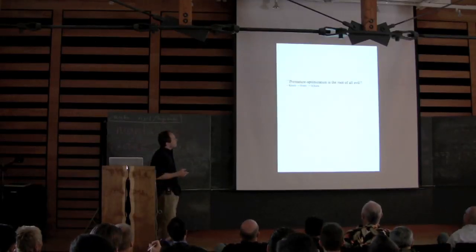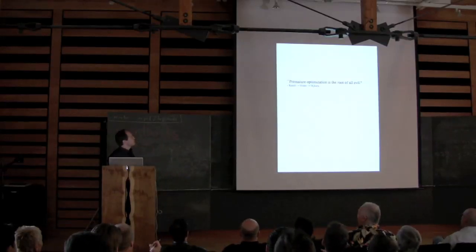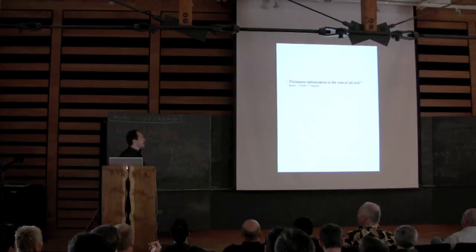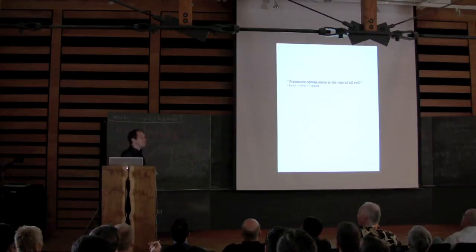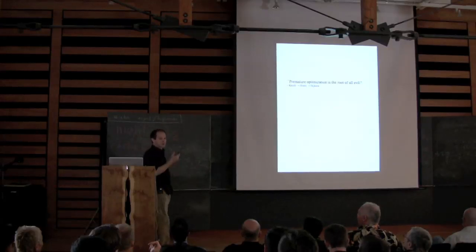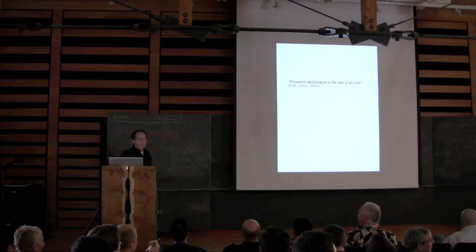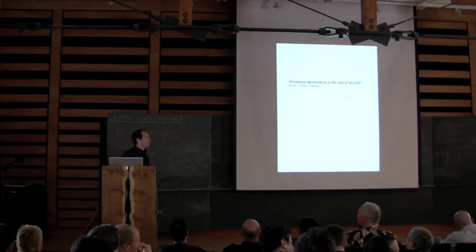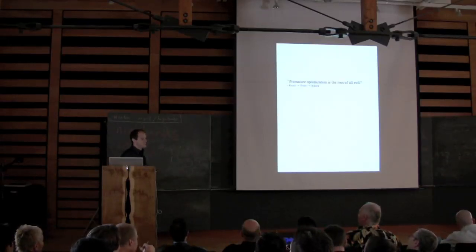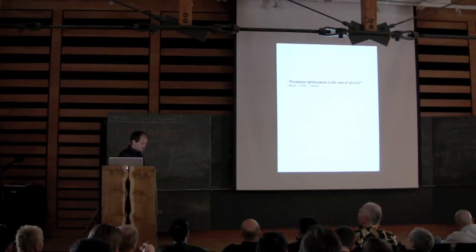We all know this quote: premature optimization, root of all evil. I don't know if anyone knows where it came from. Knuth wrote about it, and when asked, he said Hoare was the guy he got it from. And then Hoare said no, I got it from Dijkstra. And Dijkstra was like, no, it's not mine. They just go around in circles about whose quote this was.